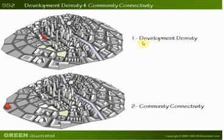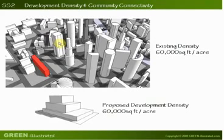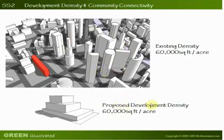So let's start with the first path of compliance, Development Density. You must achieve two things. First, the existing density should be higher than 60,000 square feet per acre. Second, the proposed building should also have a density higher than 60,000 square feet per acre.